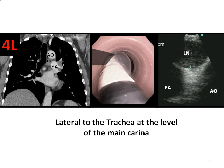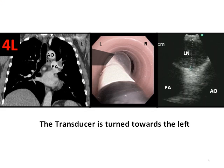Let's look at the left lower paratracheal lymph node station. This is station 4L using internationally accepted nomenclature. The station's upper border is the superior margin of the aortic arch, and the lower border is the upper rim of the left main pulmonary artery. The lymph node is usually located lateral to the trachea at the level of the main carina.